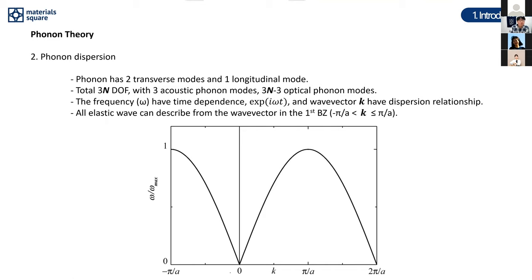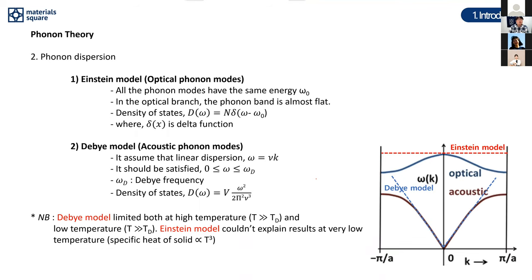The first Brillouin zone runs from –π/a to +π/a. Classically, two important phonon models have been developed: the Einstein model and the Debye model. The Einstein model assumes all phonon modes have the same energy, which is a very good approximation for the optical branch, where all frequencies are similar.